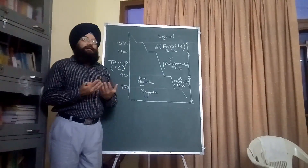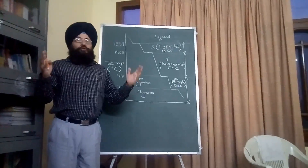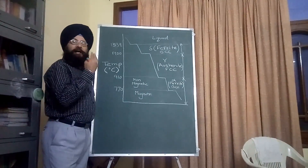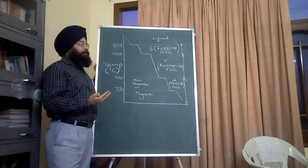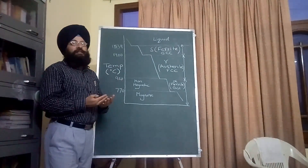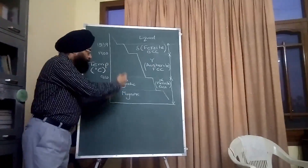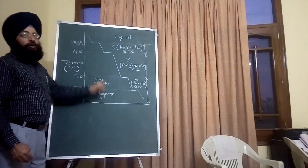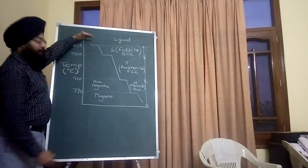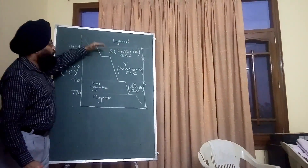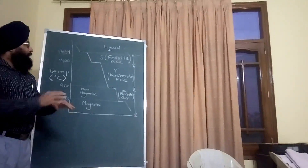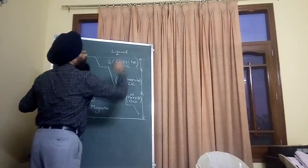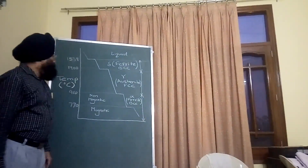Pure iron in this context means there is no carbon content. We will see the behavior of pure iron with respect to temperature — what phase transformations take place due to the effect of temperature on pure iron. It is called a cooling curve because we start at a higher temperature and cool down over time. If we started from lower temperature and increased it, it would be called a heating curve.